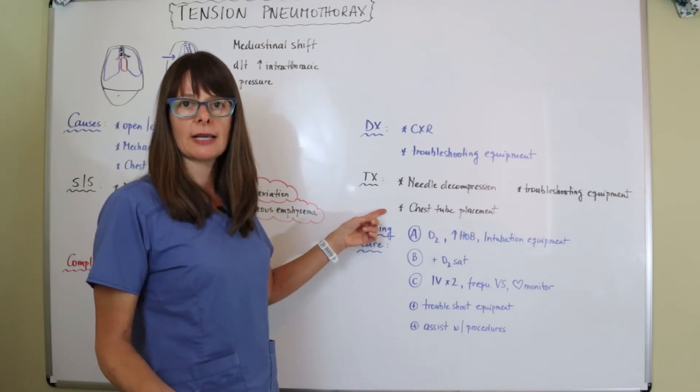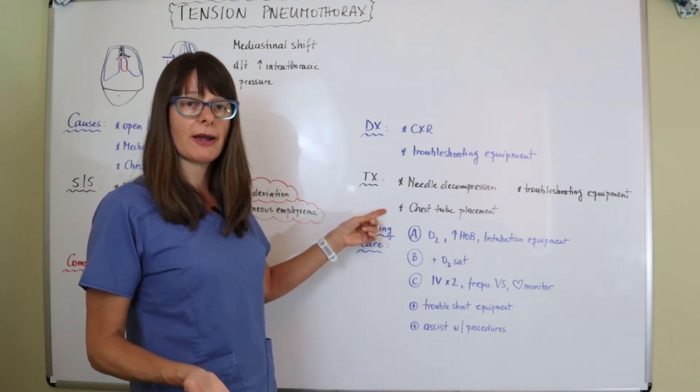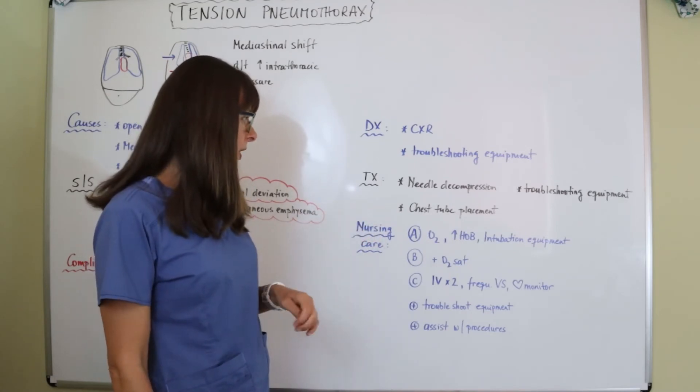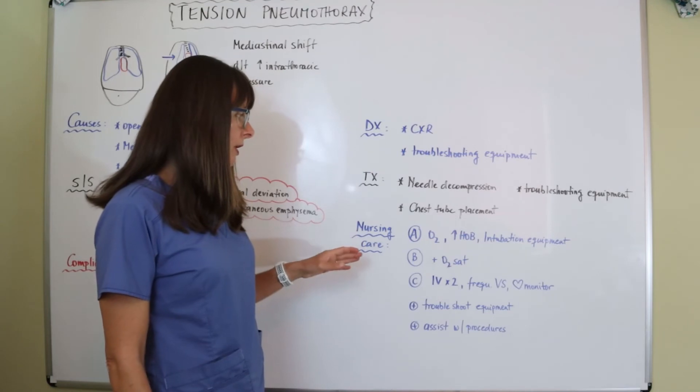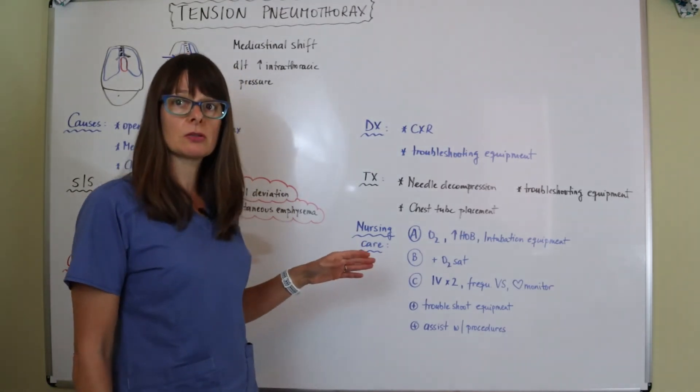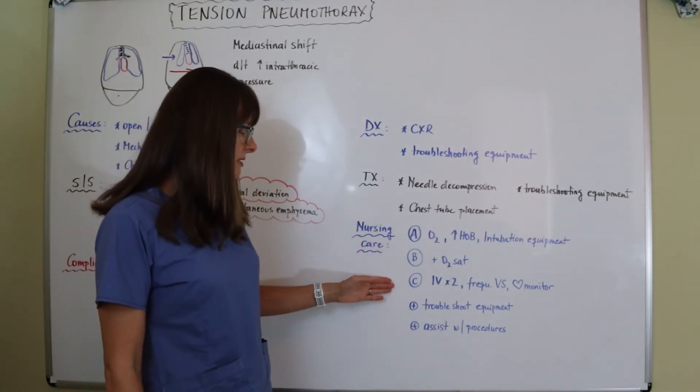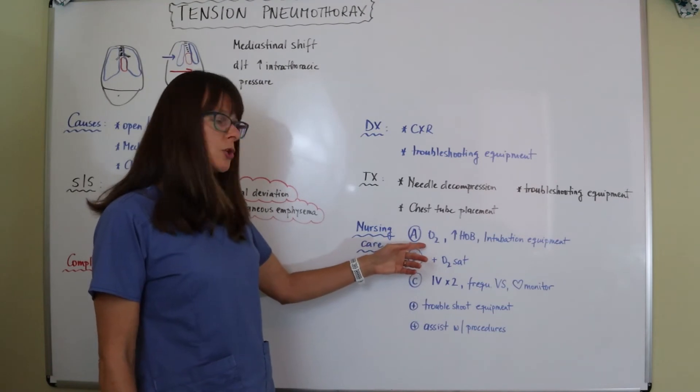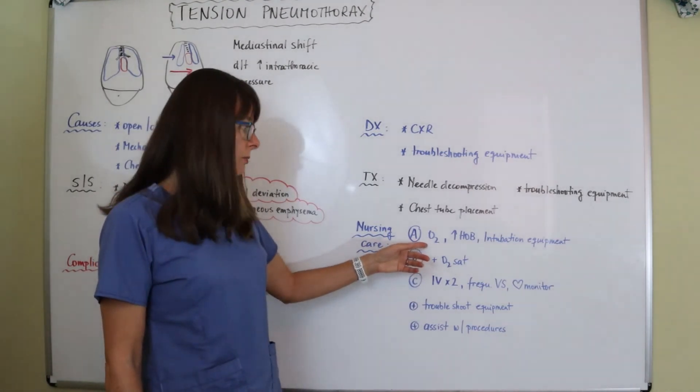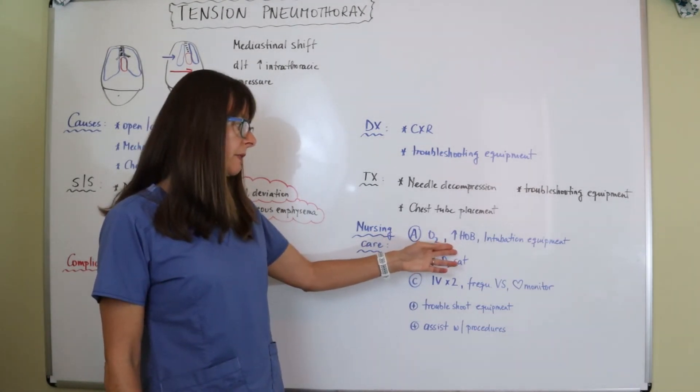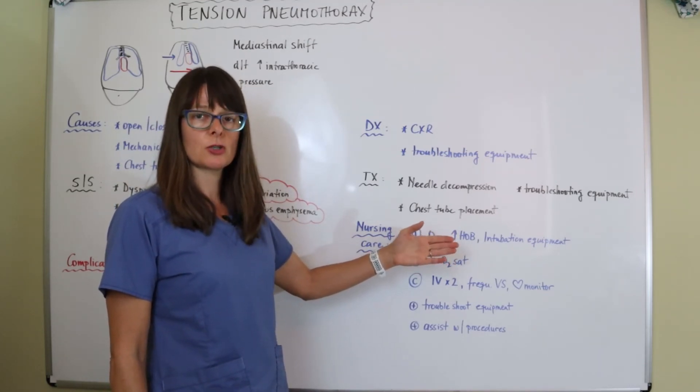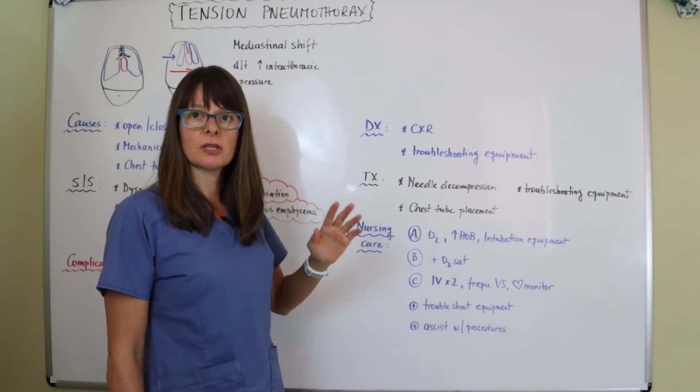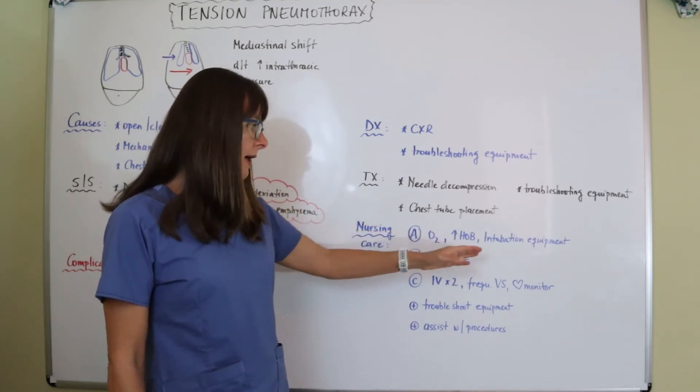Nursing care: again, this is a very sick patient. So in terms of our ABCs, for A, airway, we want to make sure we provide supplemental oxygen to the patient, elevate the head of the bed unless it's contraindicated for whatever reason. If this is a trauma victim, for example, then we still need to protect their C-spine. And then we need to have the intubation equipment ready because this can go south pretty quickly.